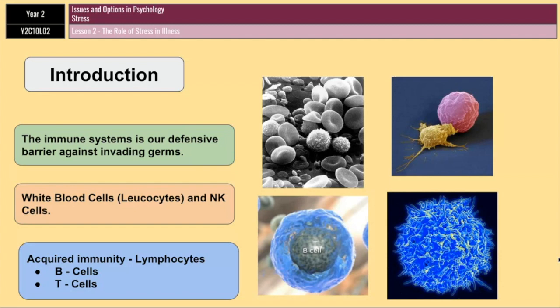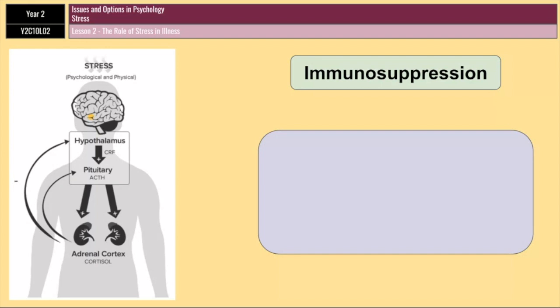Stress can suppress our immune system directly. If you remember from the last lesson, cortisol, which is produced by the HPA axis, inhibits the production of lymphocytes. If lymphocytes are being inhibited, they can't destroy specific antigens that our body may be under attack from.